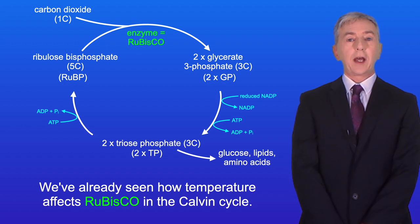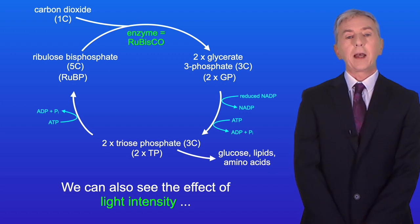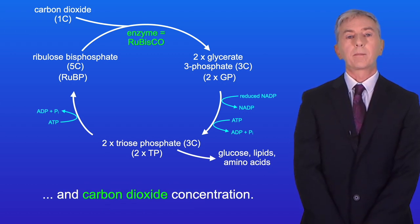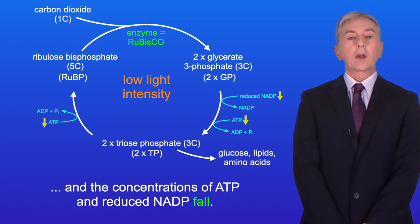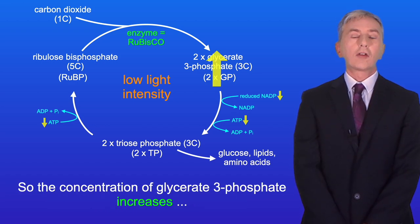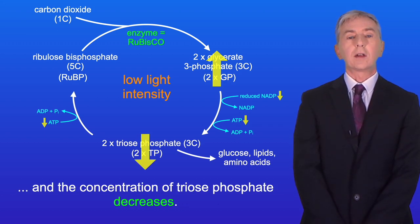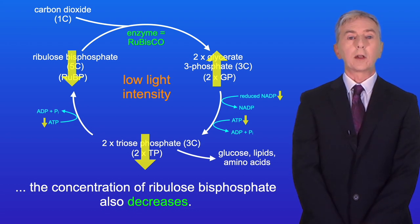We can also see the effect of light intensity and carbon dioxide concentration on the Calvin cycle. At low light intensity, the light-dependent reactions slow and the concentrations of ATP and reduced NADP fall. Less glycerate-3-phosphate can now be converted to triose phosphate, so the concentration of glycerate-3-phosphate increases and the concentration of triose phosphate decreases. And as ribulose bisphosphate is made from triose phosphate, the concentration of ribulose bisphosphate also decreases.